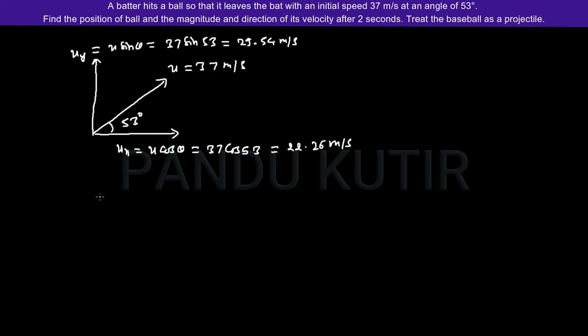Now question asks us to find the position of the baseball after time t equals 2 seconds. Since baseball is moving under the action of gravity only, its path is projectile motion. I am constructing a parabolic path for it. Let's say in 2 seconds it reaches up to here and its position is p(x,y).